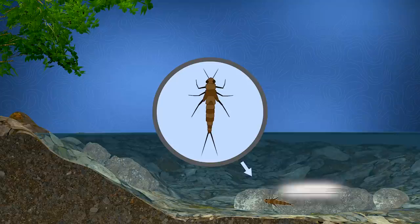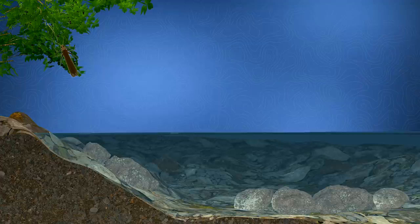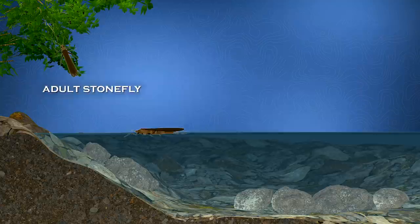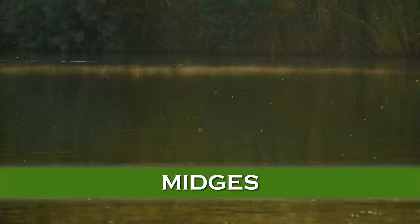Stoneflies have yet a different life cycle. Like the others, they have a larval stage underwater, but they don't hatch on the water surface like mayflies and caddisflies. Instead, these insects crawl to streamside rocks and vegetation and hatch into adults out of the water on the bank, so the adults are not available as often to the trout. However, stonefly adults are clumsy flyers and they often get blown into the water by the wind, or fall on the surface, and are also available to trout when they return to the water to lay eggs.